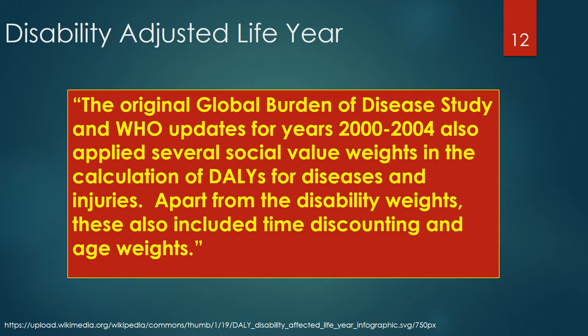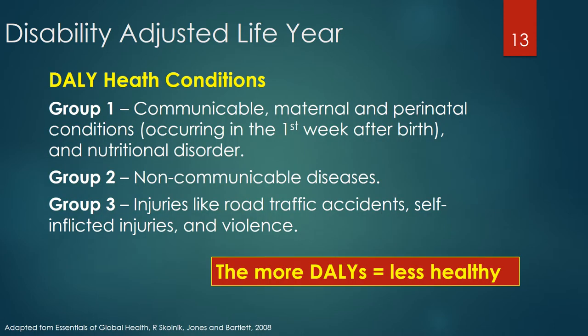The original Global Burden of Disease study and WHO updates for years 2000–2004 also applied several social value weights in the calculation of DALYs for diseases and injuries. Apart from the disability weights, these also included time discounting and age weights. When calculating DALYs, health conditions are generally divided into three categories: Group 1 — communicable, maternal, and perinatal conditions occurring within the first week after birth and nutritional disorders.